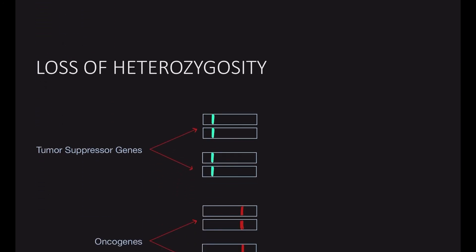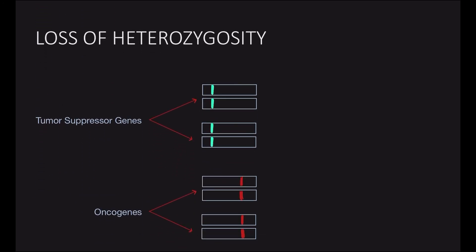Here we have two types of genes: tumor suppressors and oncogenes, which are cancer-suppressing and cancer-causing genes respectively. Loss of heterozygosity involves mutation or deletion of one allele contributed from either parent. In the case of tumor suppressors, one allele can still mask the effect of the mutated allele.